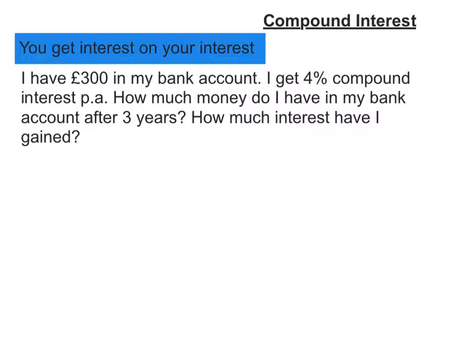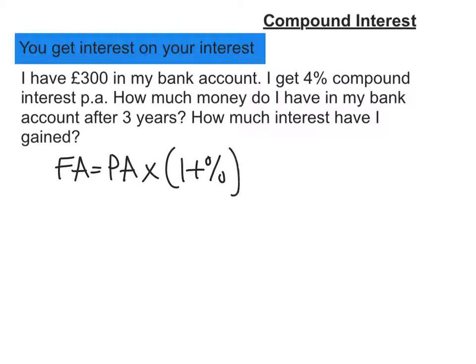Here's the second method for working out compound interest, and hopefully you'll see it's a little bit quicker. We use a formula for this. The formula is: future amount equals present amount times by 1 plus your interest rate, to the power of the number of years.